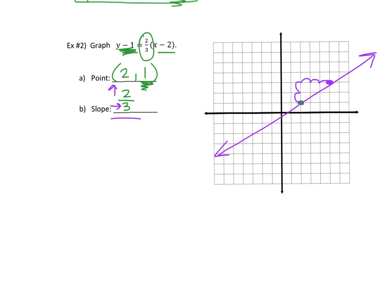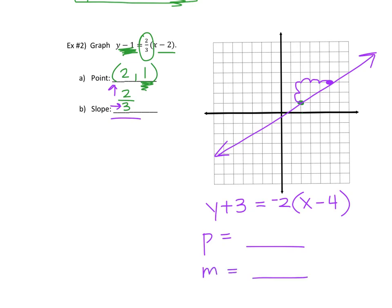Try another one on that same graph. The equation is y + 3 = −2(x − 4). You need a point and you need a slope, then graph it on that grid.